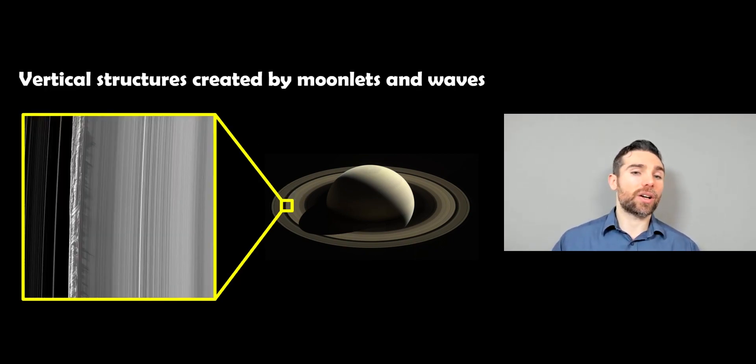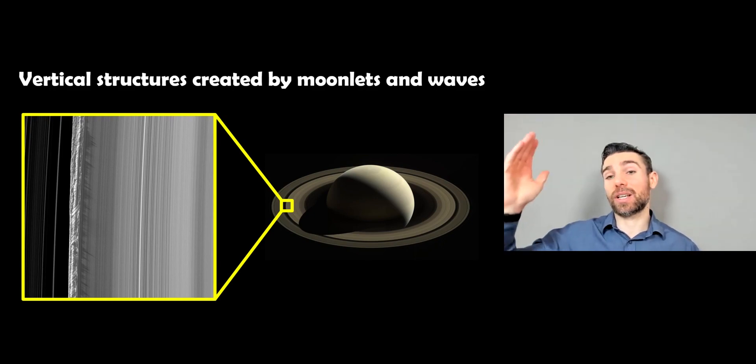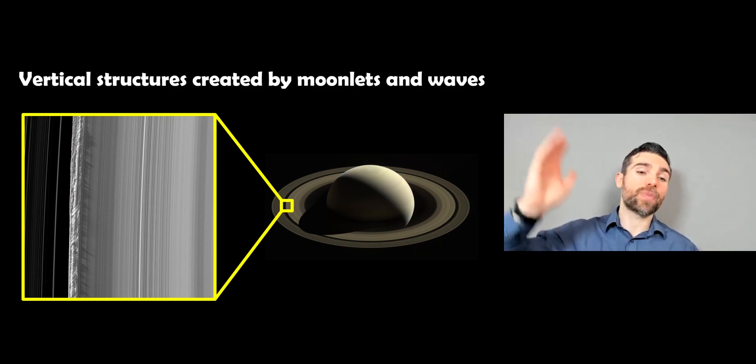You can also get things like vertical structure. So right on the edge of some of the rings, you can see these structures going straight up from the ring. Now, the rings themselves are quite thin. They are on the order of metres, when actually the rings themselves are hundreds of thousands of kilometres wide. So they're very, very thin. Yet these vertical structures at the edge can go kilometres high. Now, these are caused by small moonlets. So these are not quite moons. They're quite small, about 100 metres sort of size, maybe. And they are gravitationally scattering things vertically. And it could also be from waves at the ring edge as well, which is causing things to be thrown upwards.